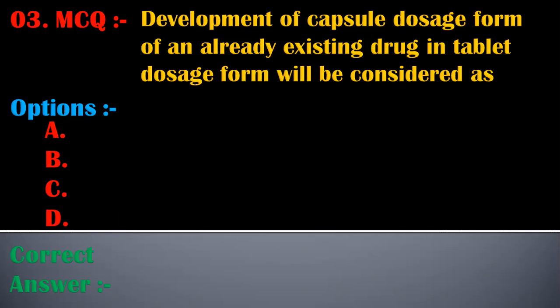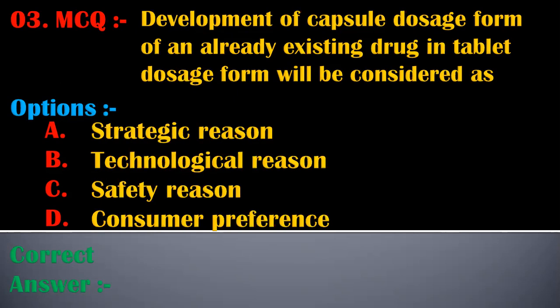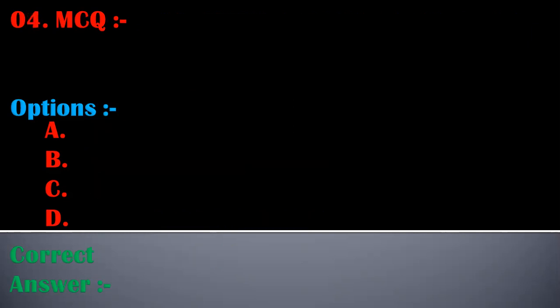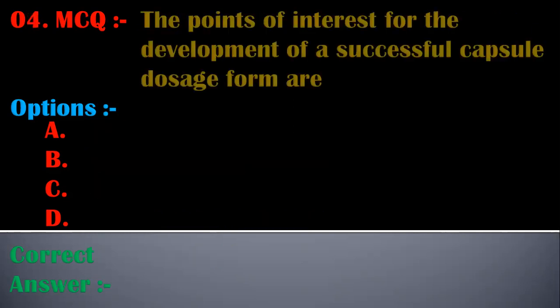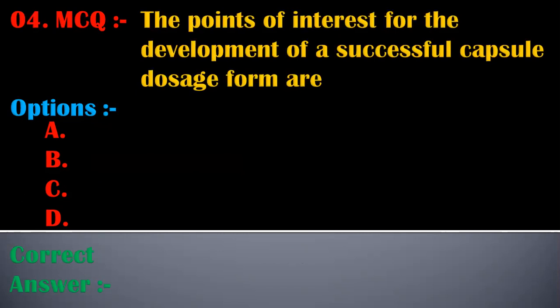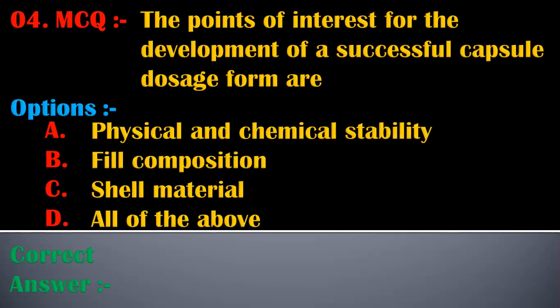The third MCQ is: development of a capsule dosage form of an already existing drug in tablet dosage form will be considered as — options are strategic reason, technological reason, safety reason, or consumer preference. The correct answer is strategic reason. Development of a capsule dosage form of an already existing drug in tablet dosage form will be considered as a strategic reason.